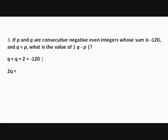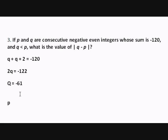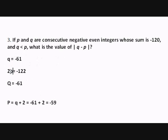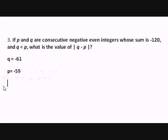And then I can go ahead and solve for Q. I will get 2Q is equal to negative 122. So Q equals negative 61. If Q is negative 61, my last step is to go back and figure out what P is. We saw before that P is Q plus 2. So P equals Q plus 2, which equals negative 61 plus 2, which finally gets us down to negative 59. So let's rewrite: Q is negative 61, and P is negative 59.